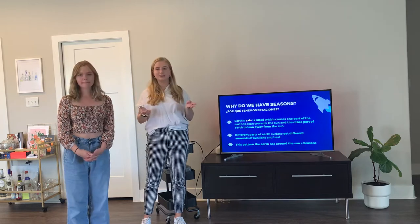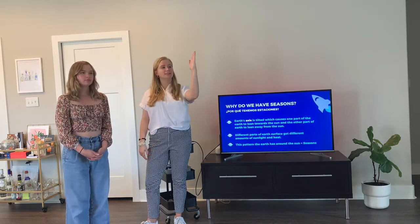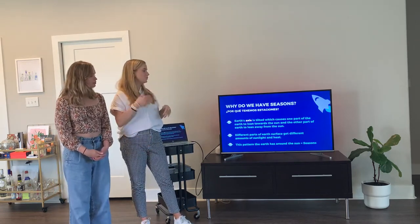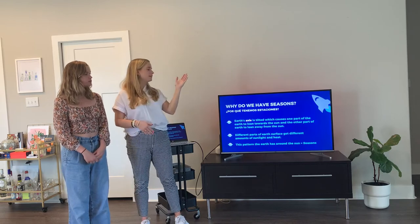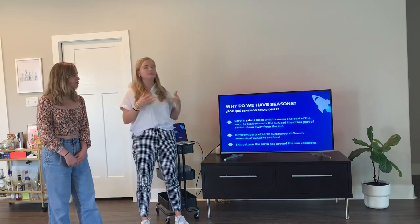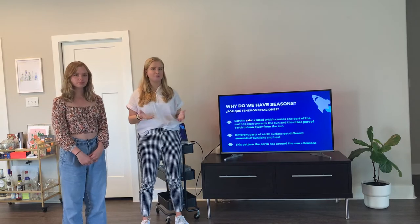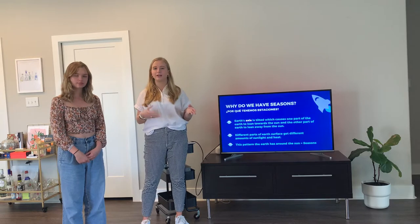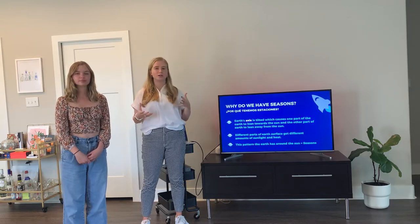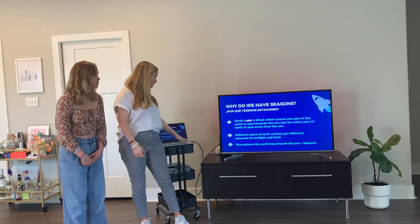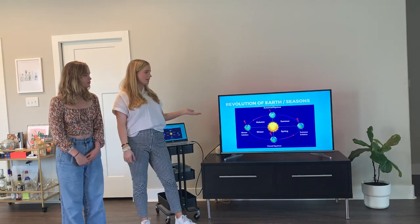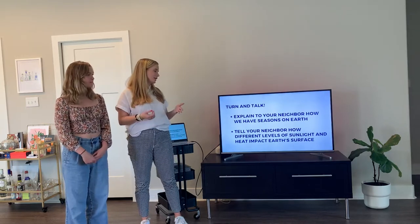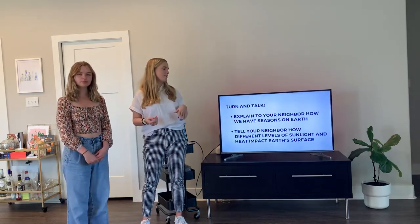Now we're going to talk about why we have seasons. Earth is on its axis, and that axis is tilted — it looks a little bit like a diagonal. Because it's tilted, it causes one part of the Earth to lean towards the Sun and the other part to lean away from the Sun. This means the Earth is getting different amounts of sunlight at different times, which is why we have seasons. In summer it's really sunny and warmer; in winter it's tilted away, you're getting more darkness and it's cold. Now turn and talk to your neighbor about why we have seasons and how different levels of sunlight impact Earth's surface.